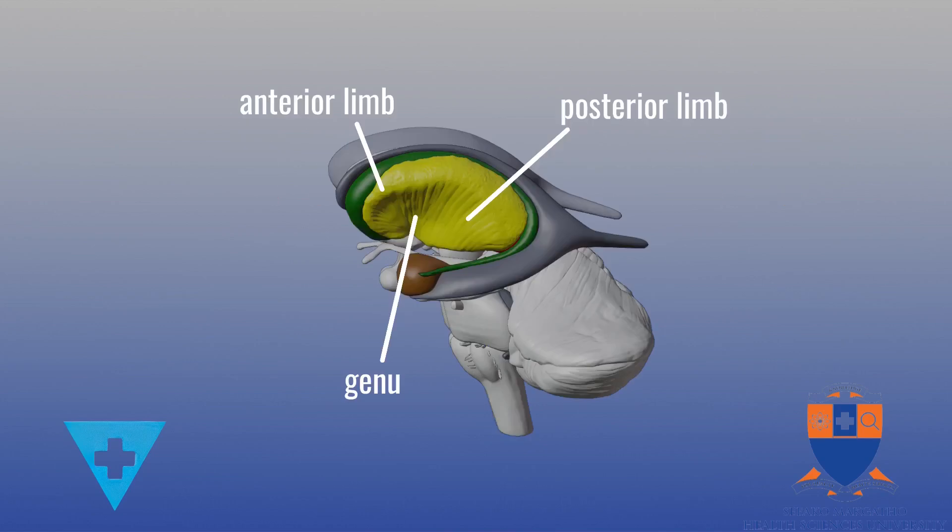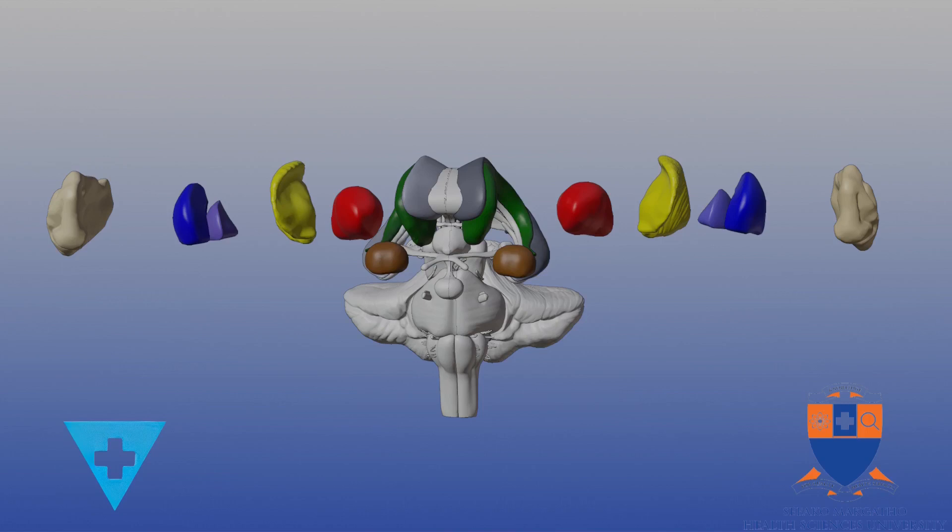These three nuclei, along with the amygdaloid body and claustrum, are regarded as the limbic nuclei, and together make up the basal nucleus.